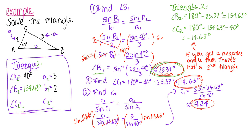To recap: if you're given two angles to start with, don't worry about a second triangle. If you're doing law of sines with only one starting angle, always check for that second triangle. If you get a math error when solving for an angle, there's no solution. Practice, practice, practice — that's what makes perfection. See you in the next video.